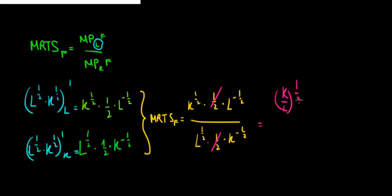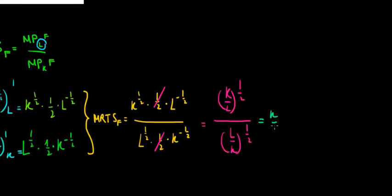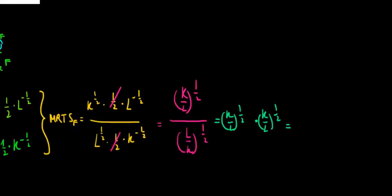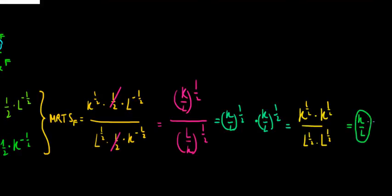Taking the ratio for food MRTS: the numerator is K to the power 1/2 divided by L to the power 1/2, and the denominator is L to the power 1/2 times 1 over K to the power 1/2. The 1/2 terms cancel out. Dividing by L over K to the power 1/2, we multiply by the inverse K over L to the power 1/2. Combining terms — K^(1/2) times K^(1/2) over L^(1/2) times L^(1/2) — gives us simply K divided by L. So the MRTS for food production equals K/L.